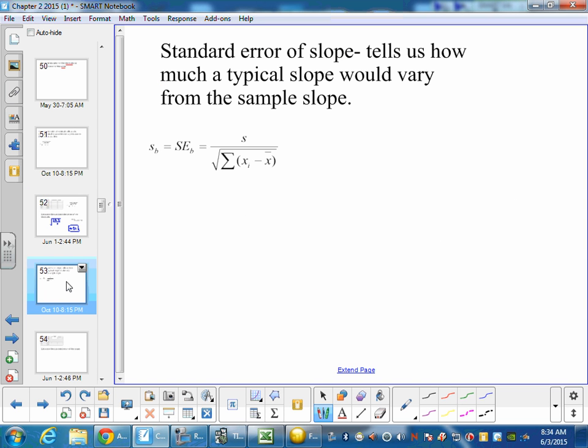Now standard error for slope tells us how much a slope will vary from the sample slope. Because if I took a different sample, I could get a different slope. So we want to know how much will the slope vary from sample to sample. So this is the standard error for slope. Sometimes they write s with a little b down here, and sometimes they write se with a little b. Two different ways to write it.